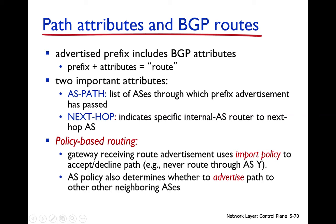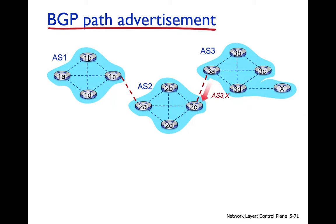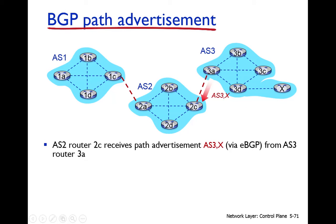A BGP path attribute contains two key attributes: the autonomous system path and the next hop. When 2C receives information from 3A, it advertises this to all routers. For example, router 2D will learn that it can reach network X through 2C and then through autonomous system 3. But if 2D wants to transmit data to X, it must first send the data to 2C — that is the next hop. So 2D forwards to 2C, 2C forwards to autonomous system 3, and autonomous system 3 delivers to X.